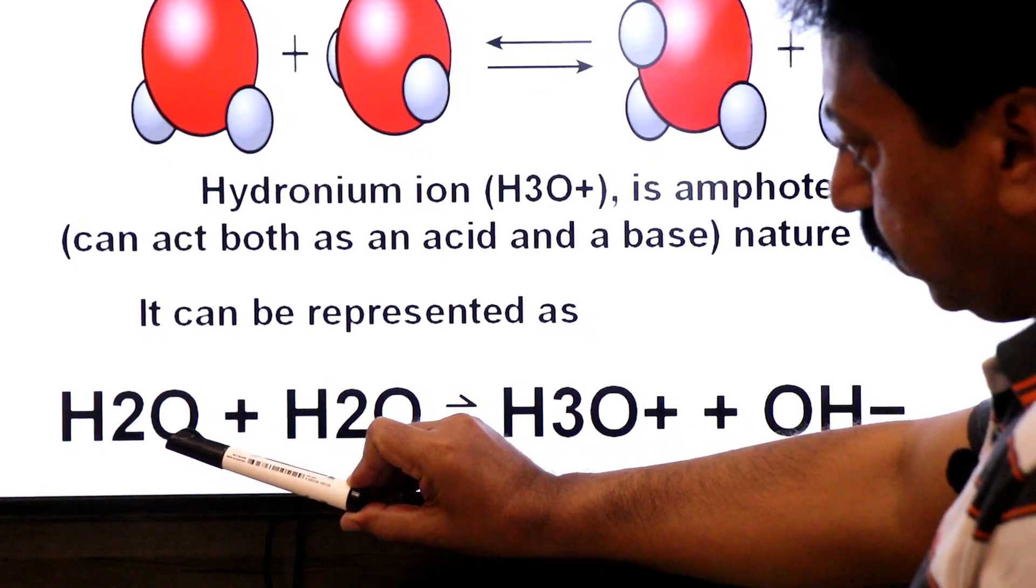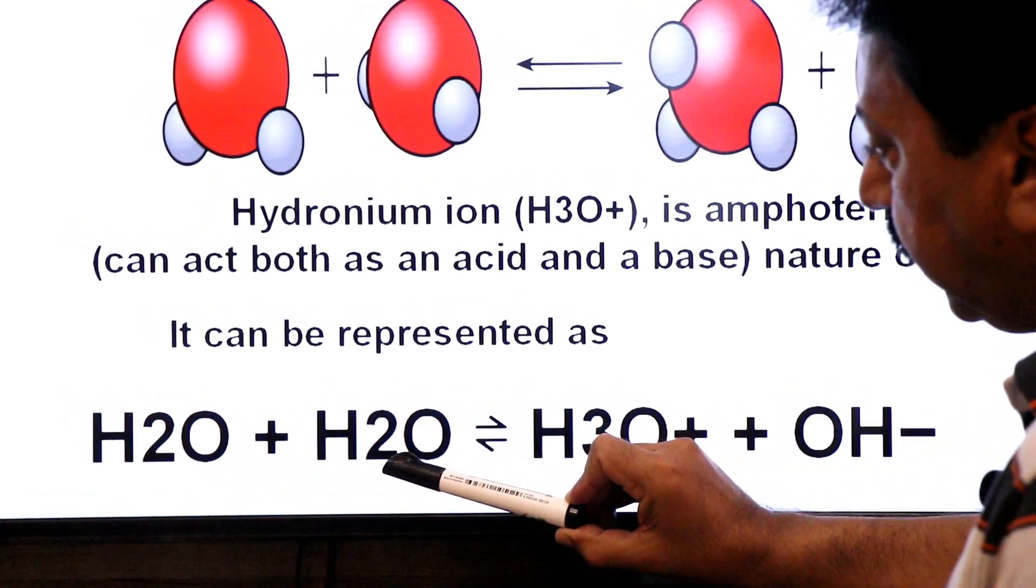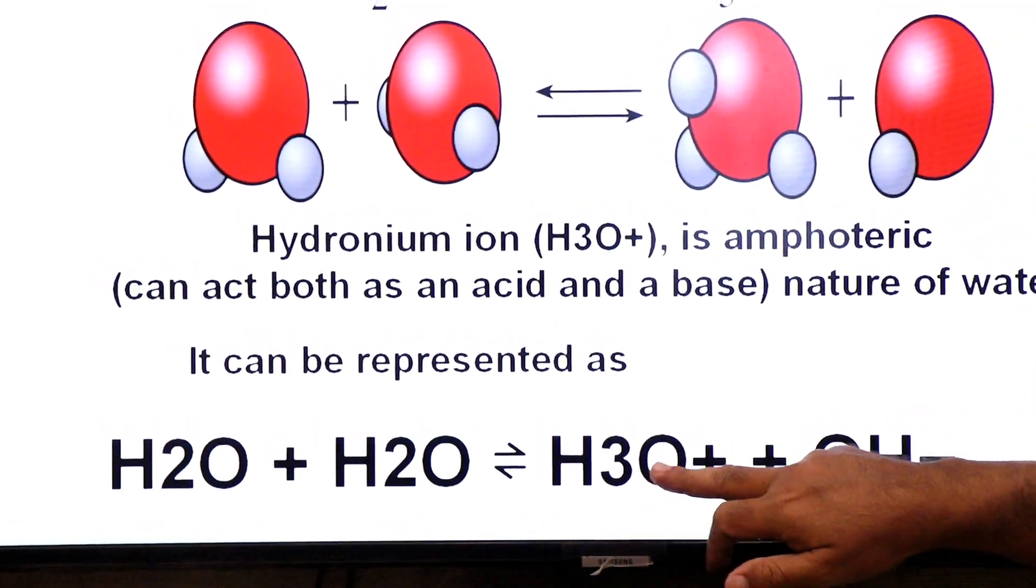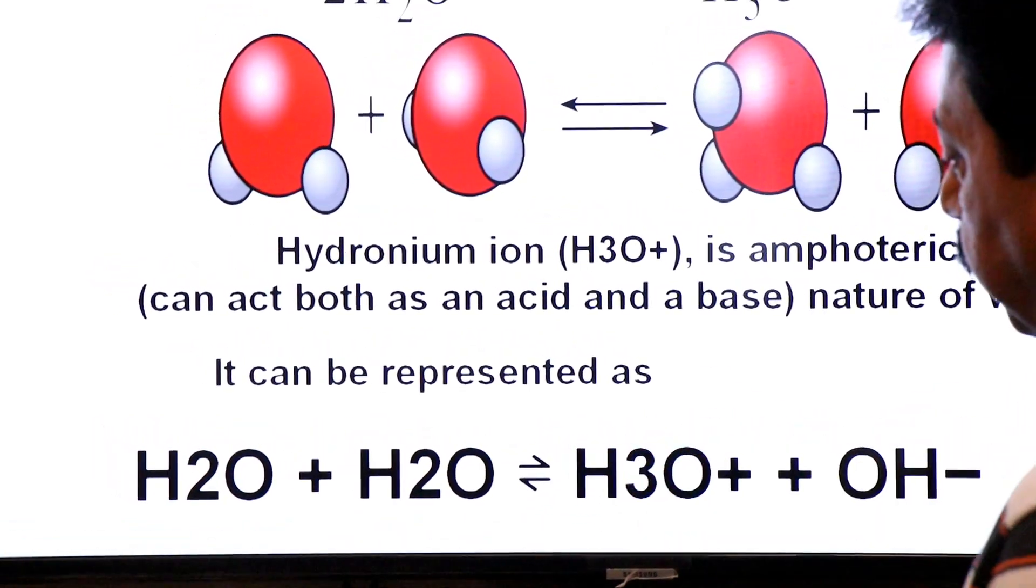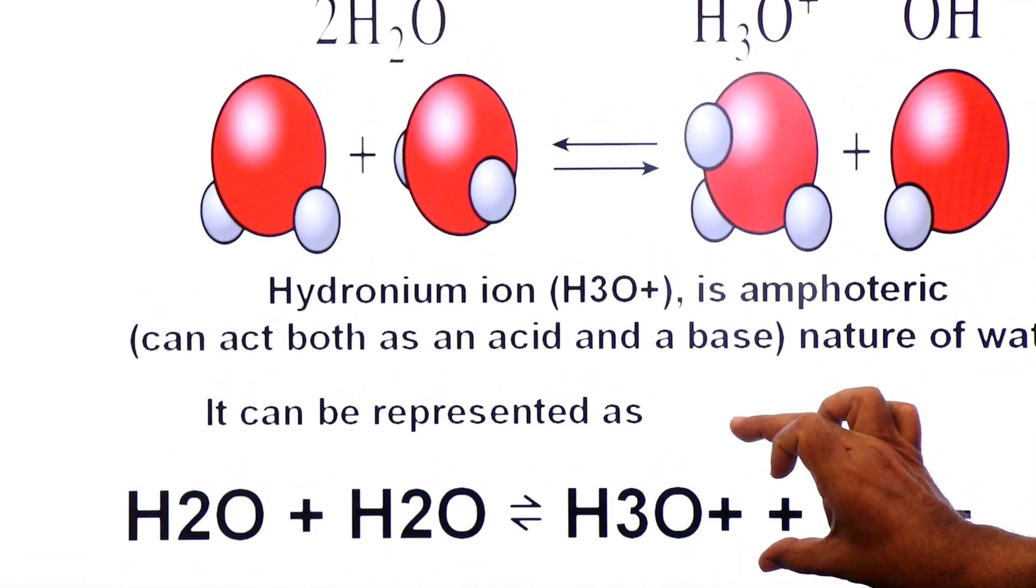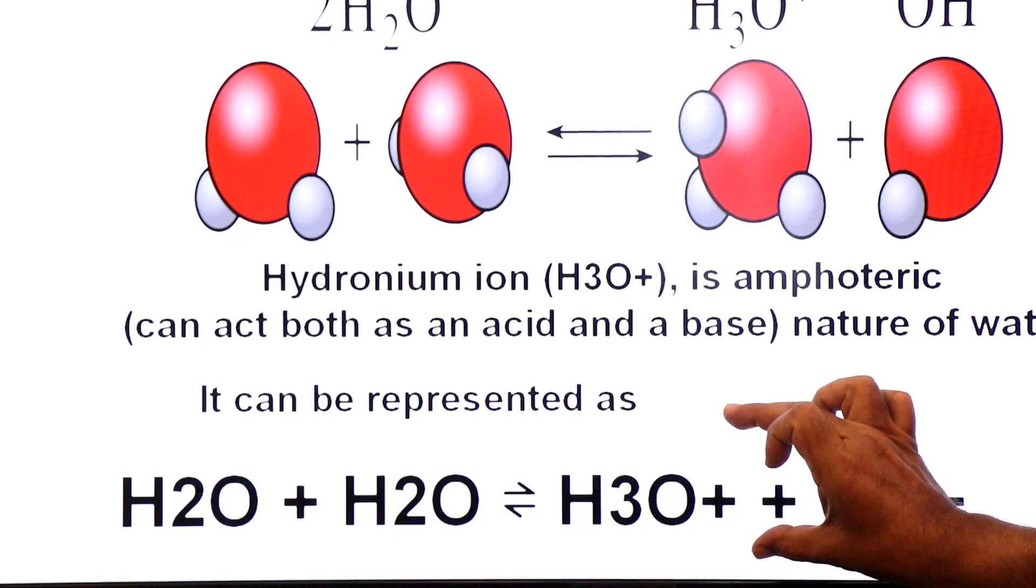It can be represented as: jaise dear students ek water se proton nikalta hai to wo doosre mein protonate add kar diya jata hai, to kya banega - hydronium ion. Dekhe, process reversible hai, to yeh proton gain bhi karta hai aur release bhi karta hai, jiski wajah se hydronium ion ki amphoteric nature hoti hai.